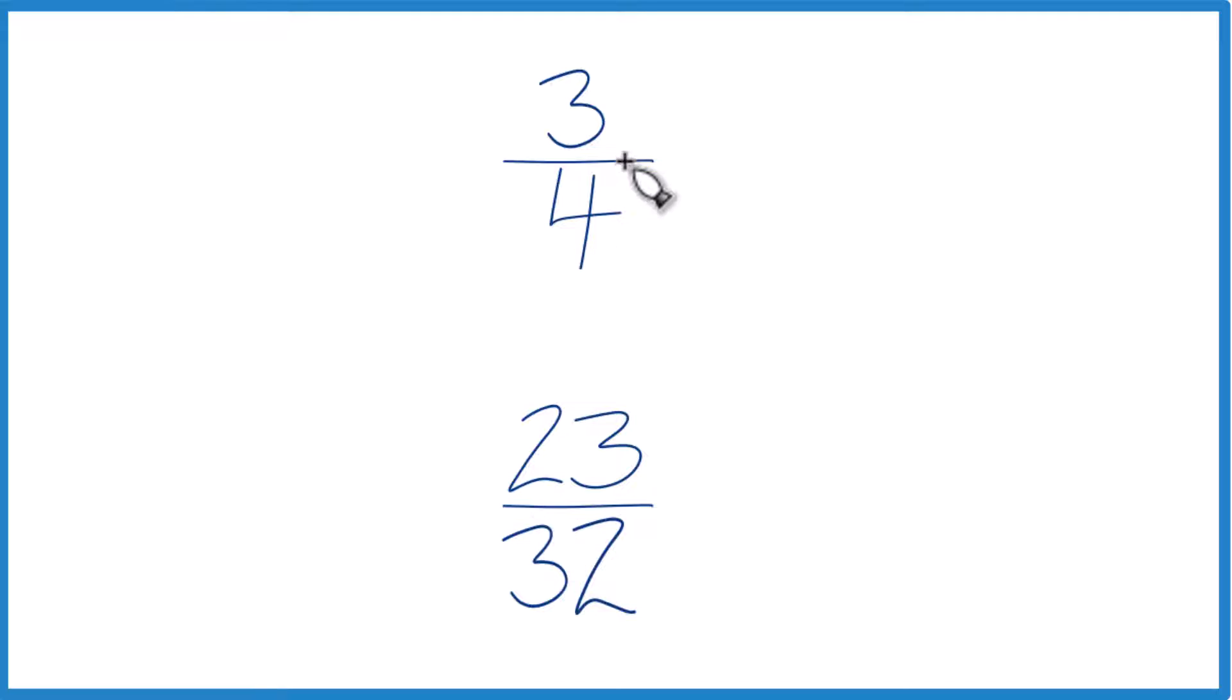You could also find a common denominator. Right now we have 4 and 32, but if these were the same, we could just compare the numerators. So let's do that.